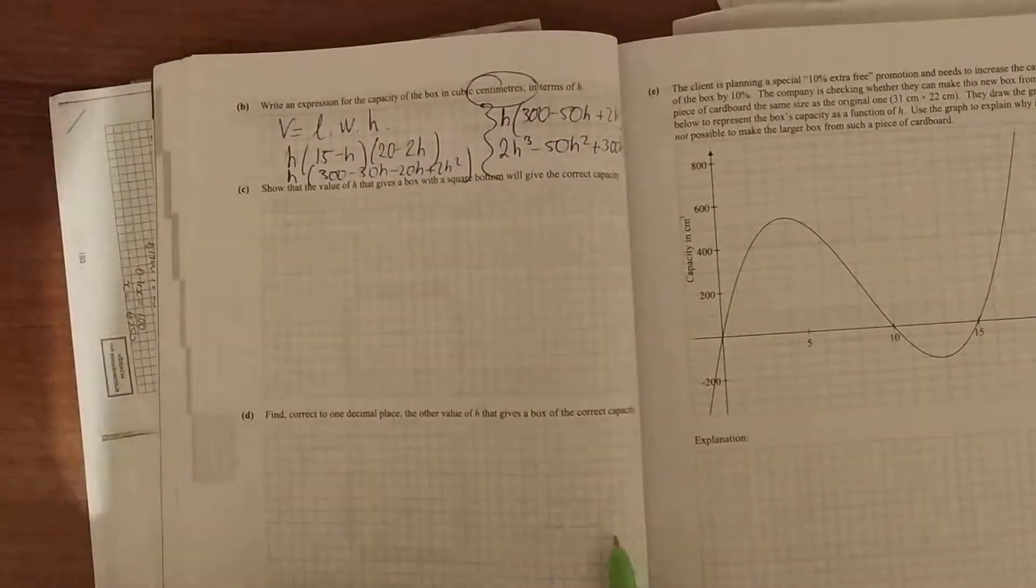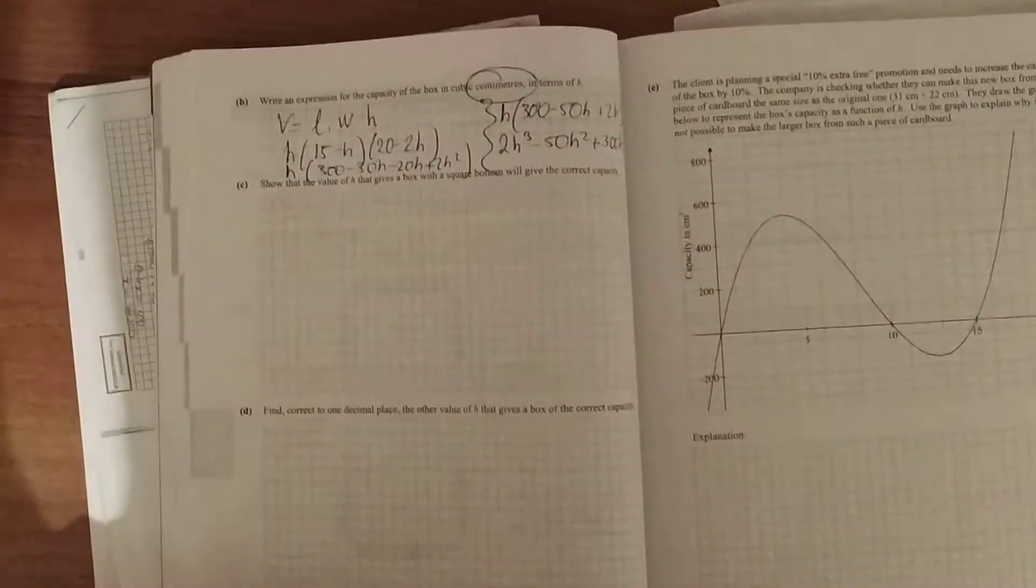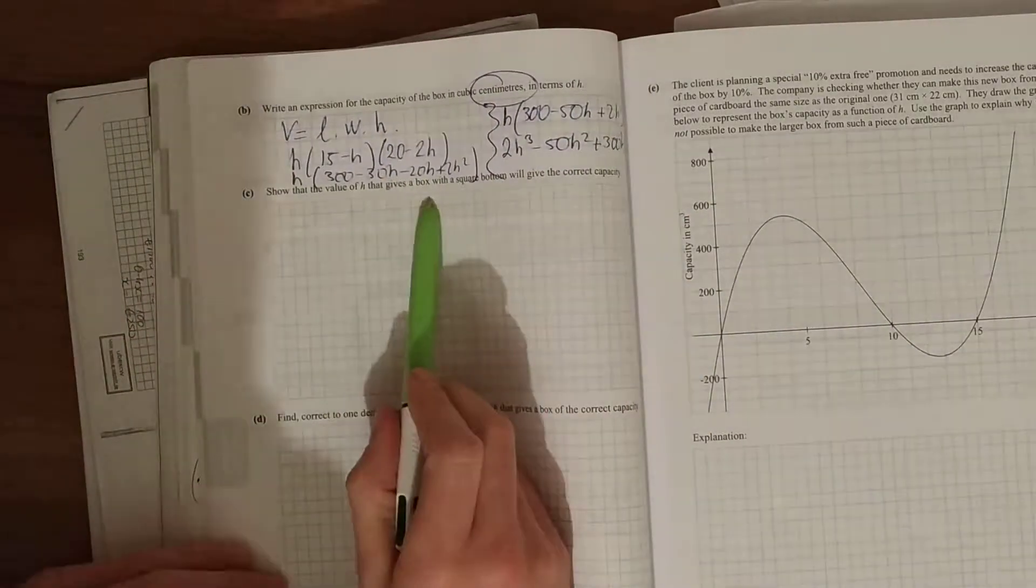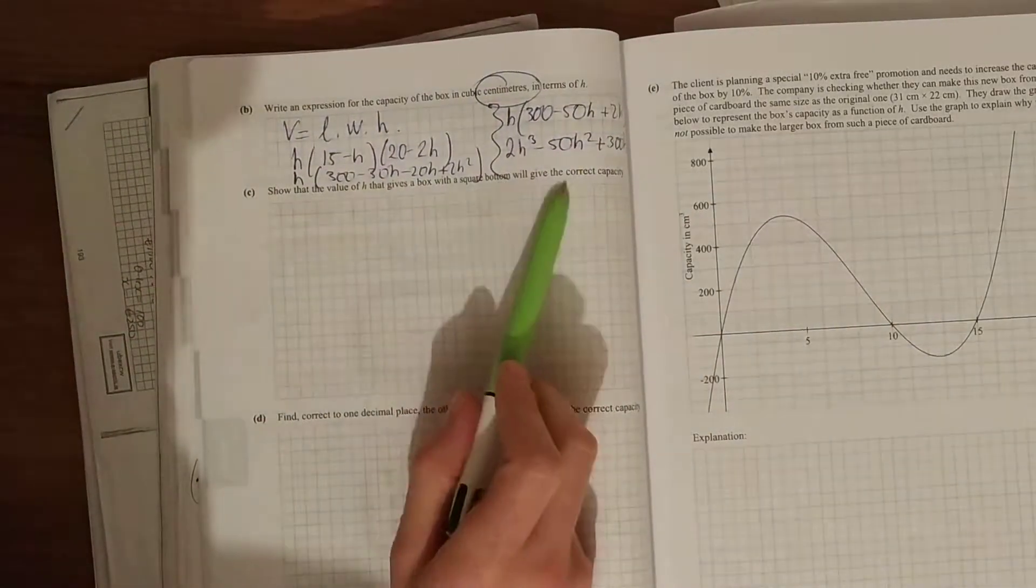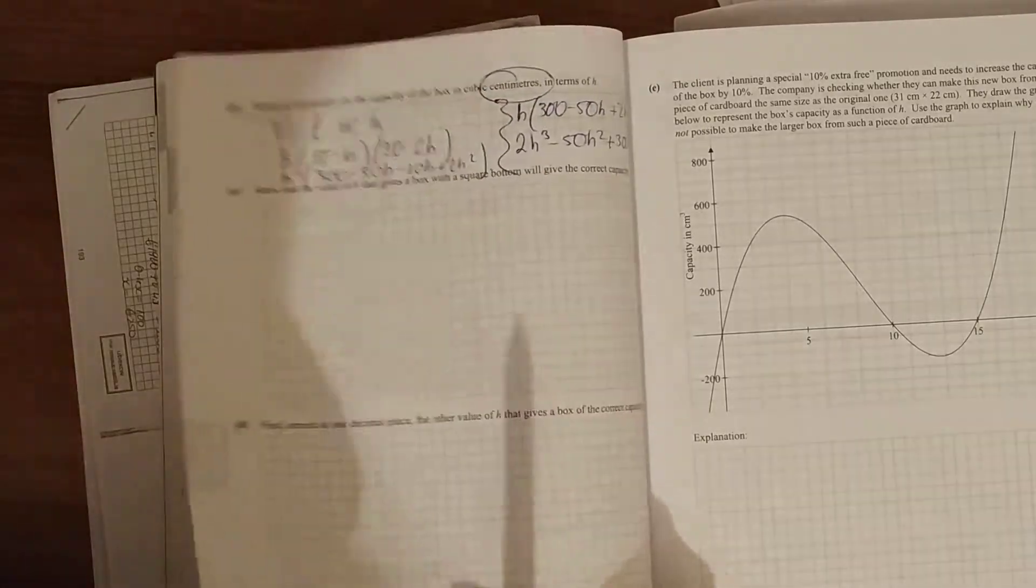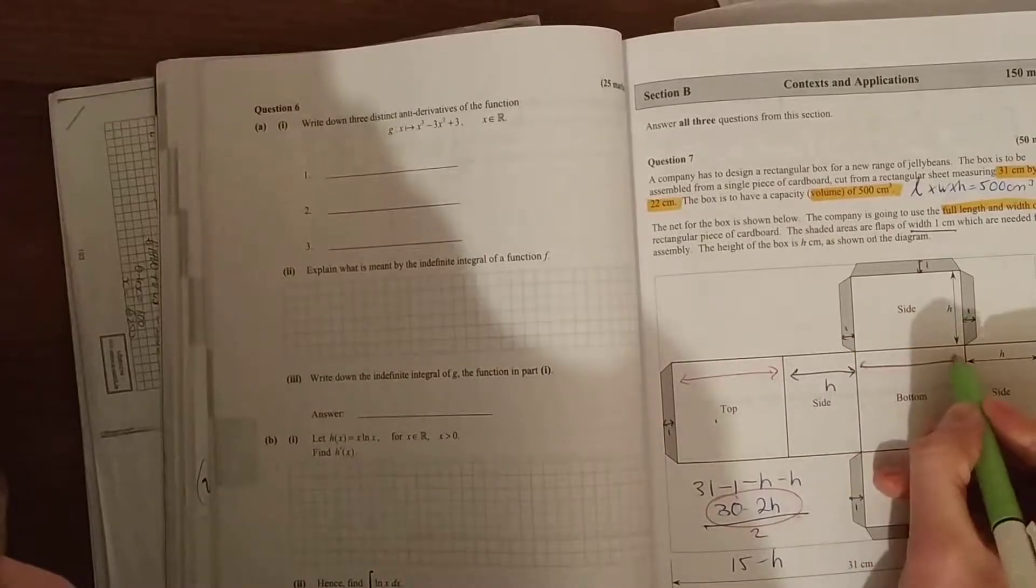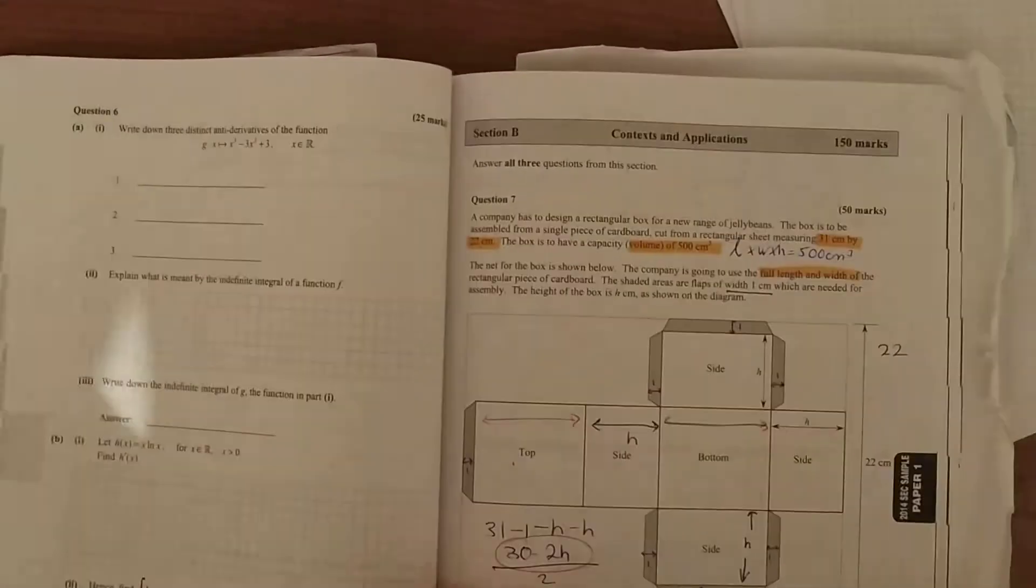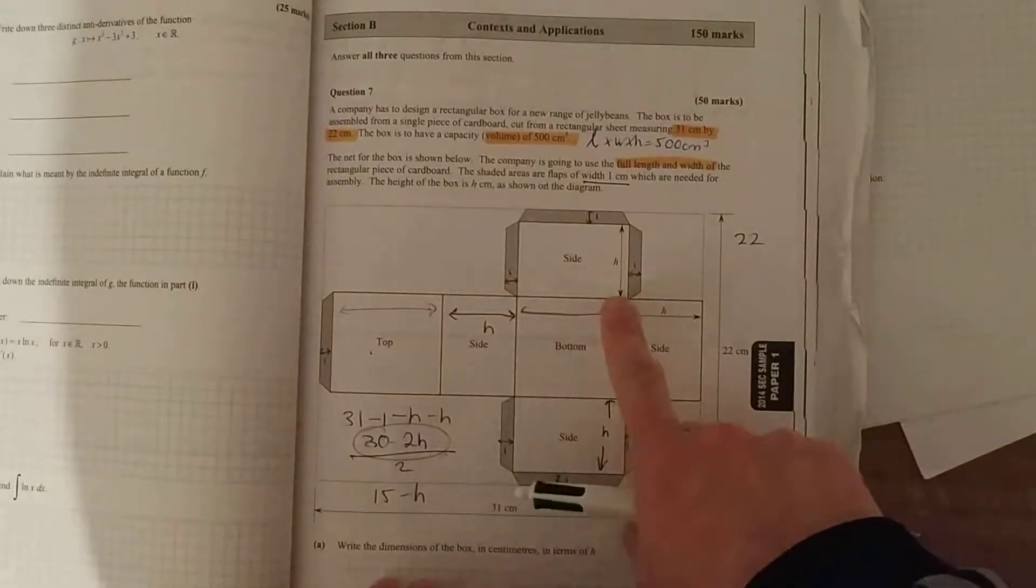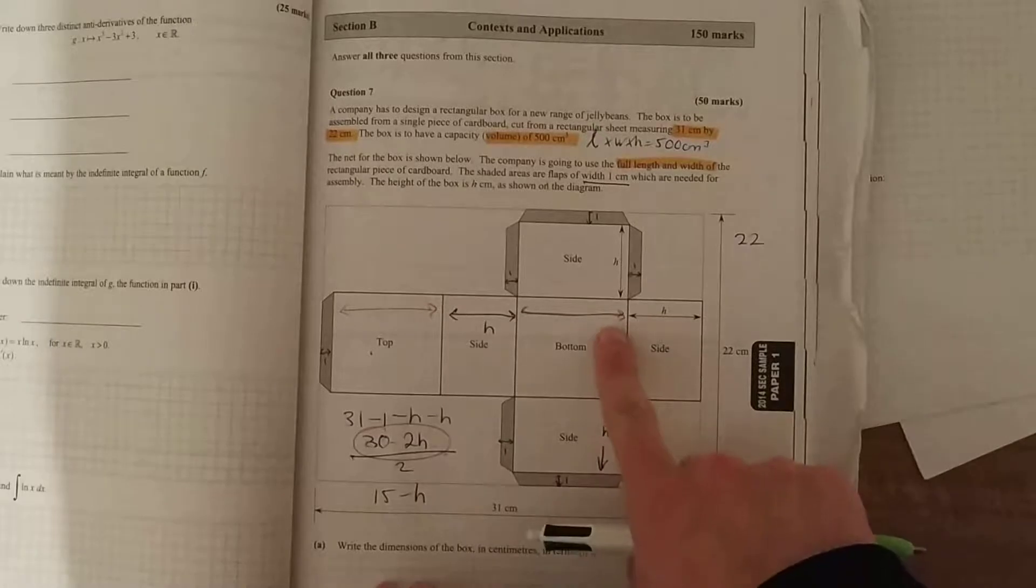It shows that the value of h that gives a box with a square bottom will give the correct capacity. Now, if it has a square bottom, that means that this red line here, so this line here, will be the same as this. So if it's a square bottom, your length and your width are going to be equal.